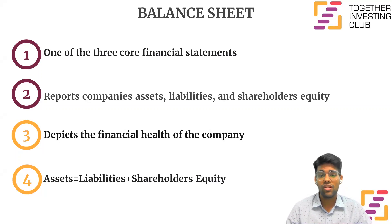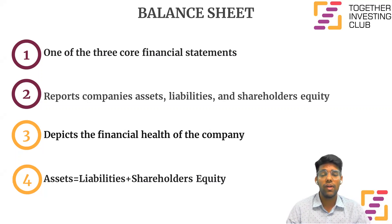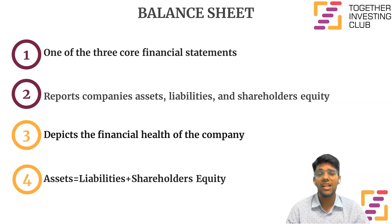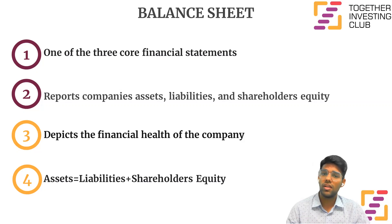There are three elements to a balance sheet. First are assets — what the company owns — in the form of buildings, vehicles, inventory, cash, accounts receivable, etc. Second are liabilities — what the company owes to others — in the form of loans, debt, dividends to be paid, etc. And the last is shareholders equity, which refers to the owner's claims on the assets of a company after the debts have been settled.